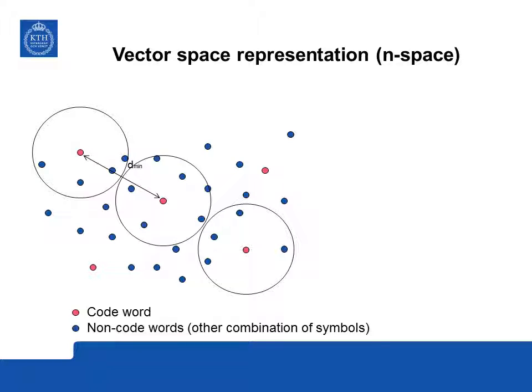To illustrate error detection and error correction capabilities of a block code, we use a vector space representation. We describe all combinations of messages of length n as vectors, where each symbol represents one coordinate. For a binary code this is a binary space with only zeros and ones on each coordinate. If we flatten this description we get a picture where all dots total 2^n — the possible combinations of zeros and ones in a word of length n.